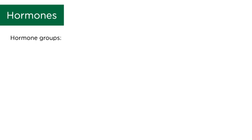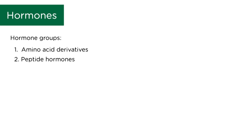There are three basic groups of hormones. One, amino acid derivatives. Two, peptide hormones. And three, lipid derivatives or steroid hormones.